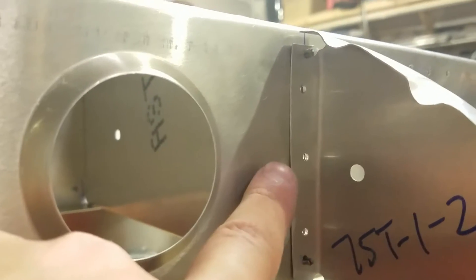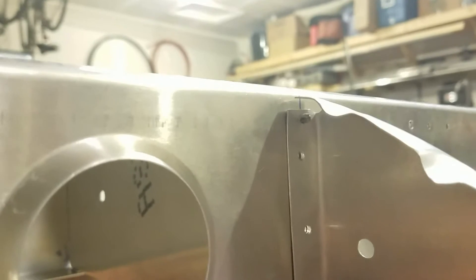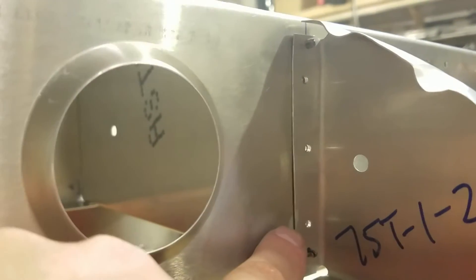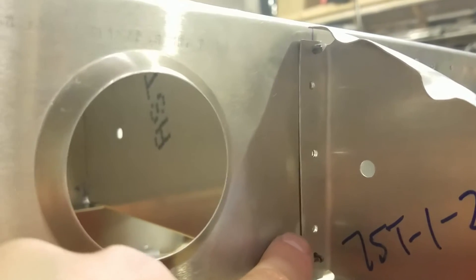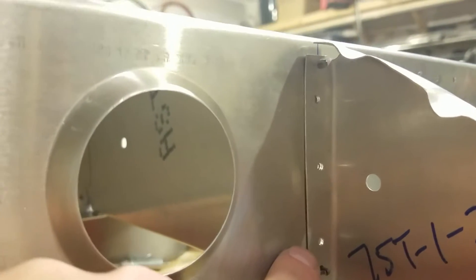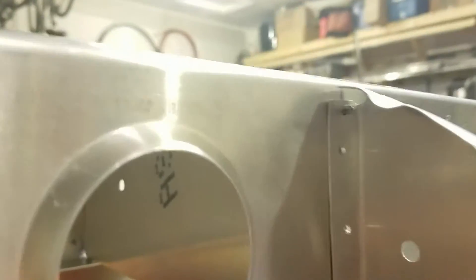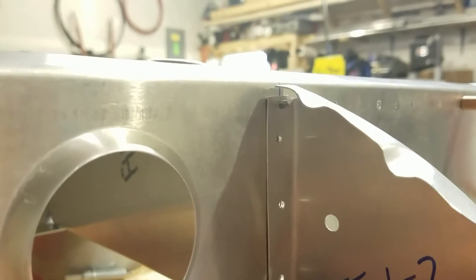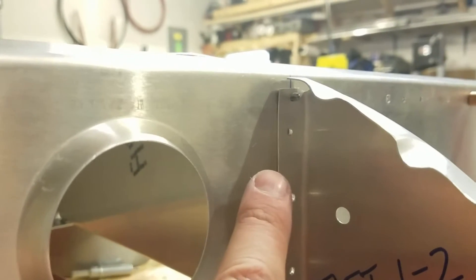Just popped a couple more A4 rivet holes in there to hang onto everything. These are the types of mistakes that you might end up having with plans building when not all your holes are drilled for you and not all your parts are formed. There's about one rivet diameter edge distance there on that flange when really you have to have a bare minimum of one and a half, so that's why I put the extra rivet hole in there.